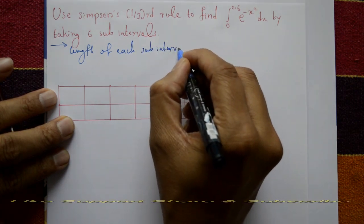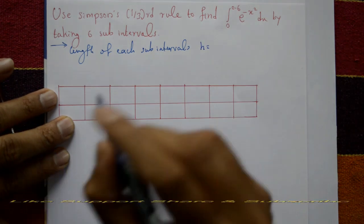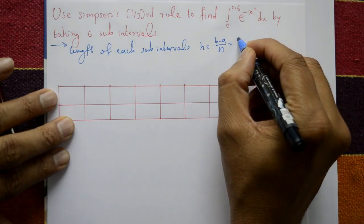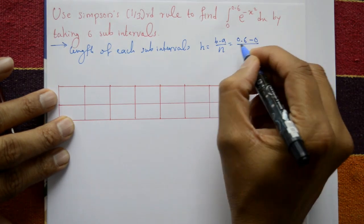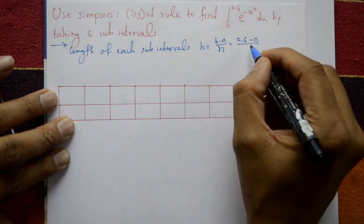Length of each sub-interval: h is equal to (b minus a) divided by n. b means 0.6 minus 0 divided by n. Six sub-intervals means seven ordinates, so n is equal to 6.